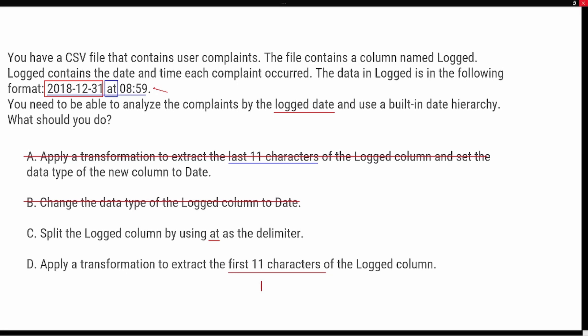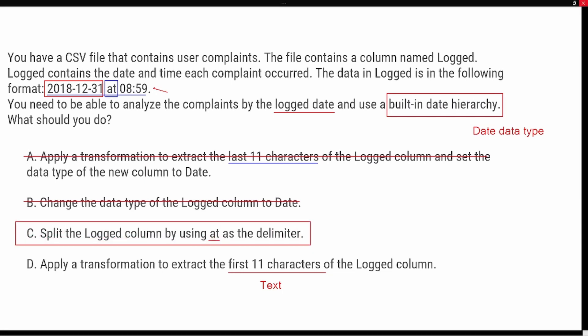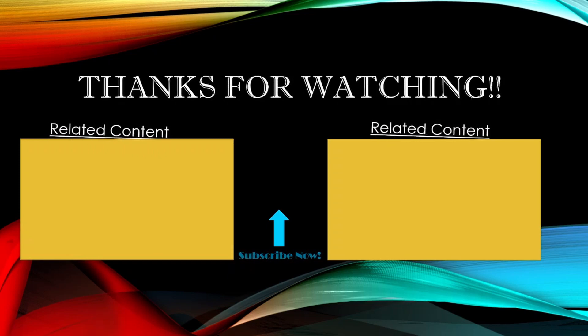Extracting the first eleven characters leaves the result as text because of the space between the date and the word 'at.' This would not give us the proper Date data type required for the built-in date hierarchy — the column must be a Date data type. So the correct answer is C: split the log column using the 'at' delimiter. Thank you so much for joining me — if you like this video, give it a thumbs up and subscribe for more content. See you in the next one!